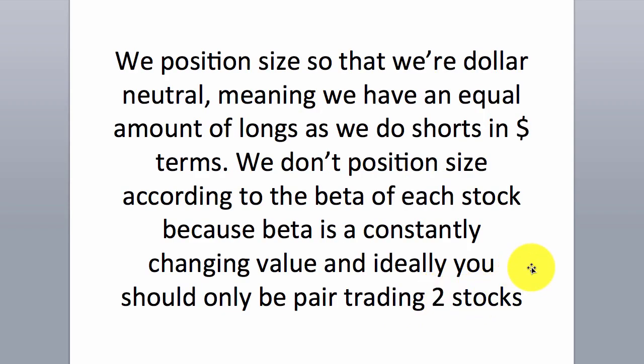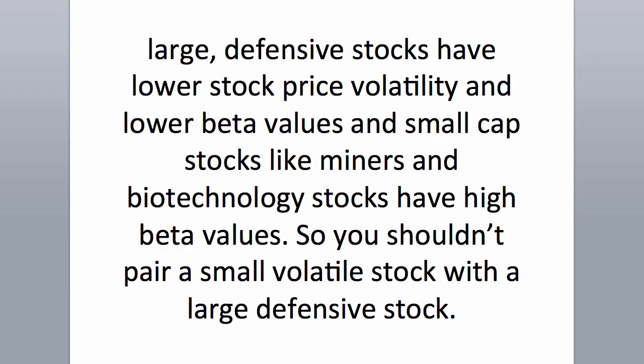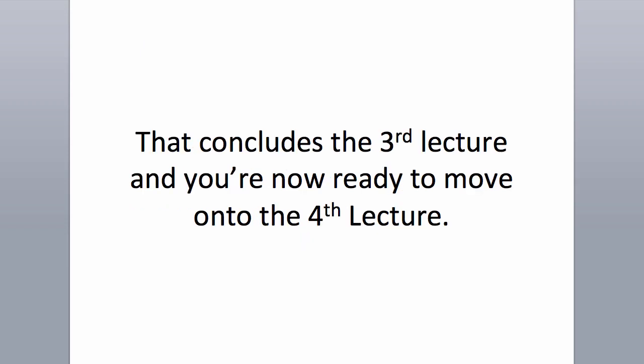We position size so that we're dollar neutral, meaning we have an equal amount of longs as shorts in dollar terms. We don't position size according to the beta of each stock, because beta is a constantly changing value, and ideally you should only be pair trading two stocks that have similar beta values. Beta is a measure of a stock's volatility relative to the market — the beta of the index such as the S&P 500, FTSE 100, or ASX 200 is 1.0. Large defensive stocks have lower beta values, while small cap stocks like miners and biotechnology stocks have high beta values. So you shouldn't pair a small volatile stock with a large defensive stock. This concludes the third lecture, and you're now ready to move on to the fourth lecture.